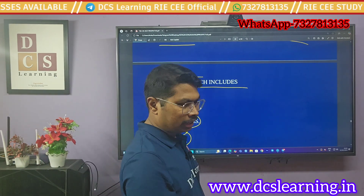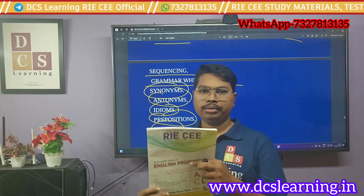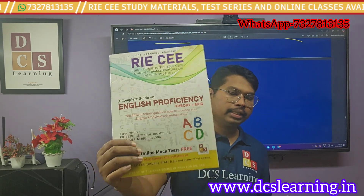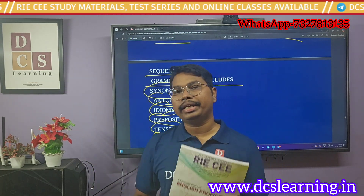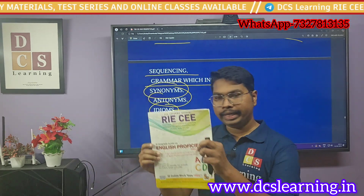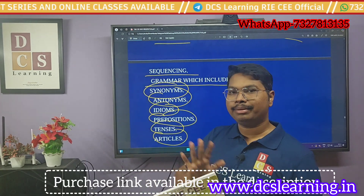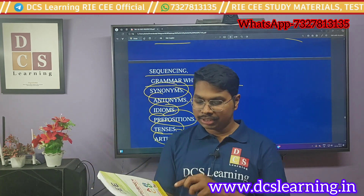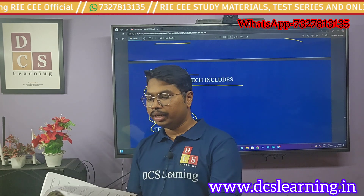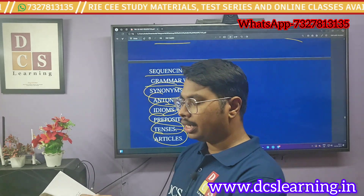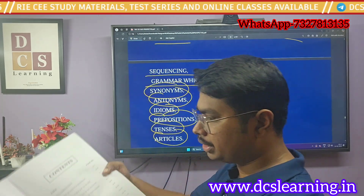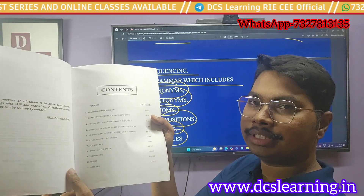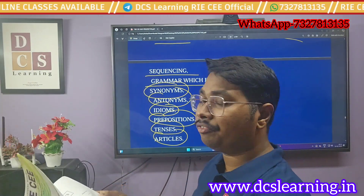Next topics include sequencing, grammar, synonyms, antonyms, idioms, prepositions, tenses, articles, and some extra topics. For this subject you can follow this book, which covers the entire syllabus of the RICW examination. It also contains previous years' questions and around 600 plus practice questions. If you see the index or content page, you will find that everything aligns with the official syllabus.